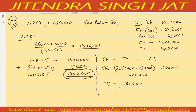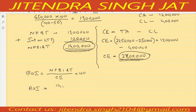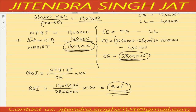Both things are computed — capital employed as 28 lakh and net profit before interest and tax as 14 lakh. Return on investment equals 14 lakh divided by 28 lakh multiplied by 100. 14 is half of 28, so 1 by 2 means 50 percent. More the ratio, better the financial condition and profit-earning capacity.